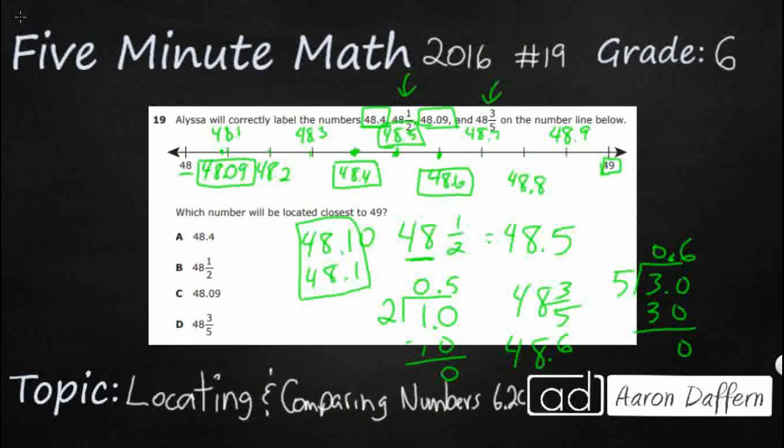So, it looks like that is the one that is closest to 49. Remember, that's our goal. Closest to 49. So, we're going to say 48 and 3 fifths. Our answer is D.